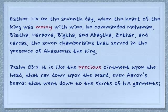Esther 1:10 — on the seventh day, when the heart of the king was merry with wine, he commanded Mehuman, Biztha, Harbona, Bigtha, and Abagtha, Zethar, and Carcas — the seven chamberlains that served in the presence of Ahasuerus the king. He was feeling pretty good. He'd been having a party for a long time.